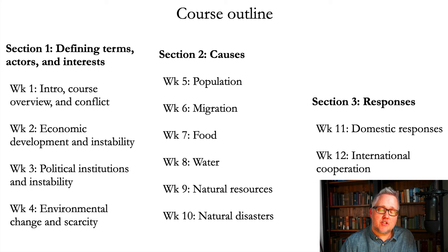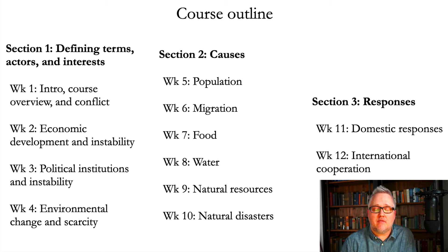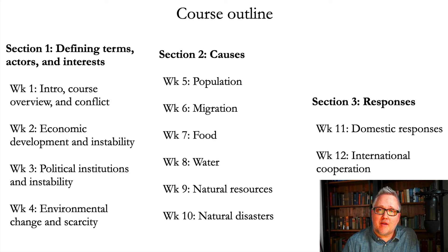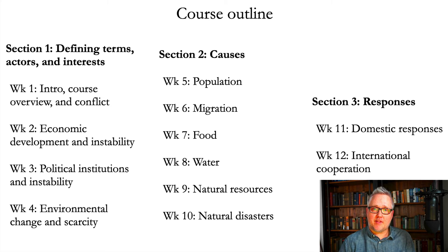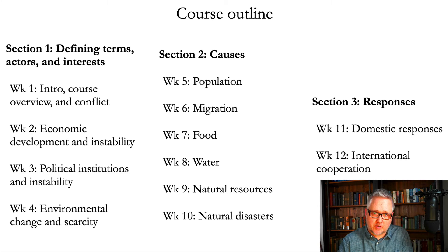The second section looks at the causes of specific types of instability, starting from population and migration — because we all exist, we all want things, we all need things to survive, and we have a tendency to move. Migration brought me and my family here for better job opportunities and family connections. People move for a whole bunch of different reasons, whether environmental, economic, political, or social. Then we turn to food production and consumption, water abundance and scarcity, natural resources, and natural disasters. I tried to develop the second half of the class to start from a human-centered approach and then move out to more environmental factors, natural resources, and natural disasters.